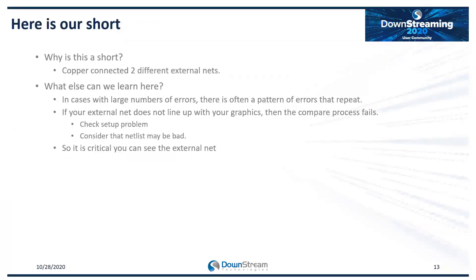The reason those were shorts is that copper was connecting two different external nets — we saw one in red and one in white, which is where the error is. With large numbers of errors, sometimes patterns repeat — those arcs on the top layer could have repeated elsewhere causing more errors. And that drill hit was shorting not just two nets but everything, shorting ground and power together. It's critical to always make sure your external netlist is on and lines up with your data. You could also have a bad external netlist — it doesn't happen often, but when it does you need to recognize it or you'll waste time.